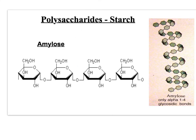The first example you need to know about is starch — found in things like potatoes. The particular type we need to know about is called amylose. Hopefully from the diagram you can work out that the monosaccharide used to build it is alpha glucose. It's made from many repeated alpha glucoses joined together by glycosidic bonds.